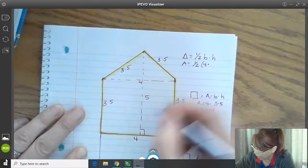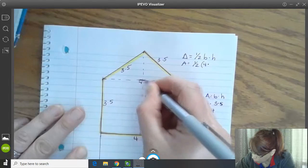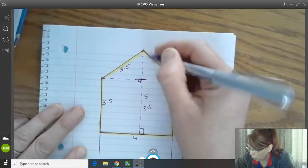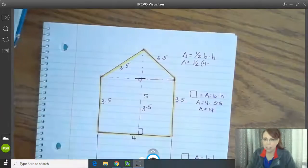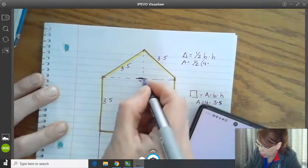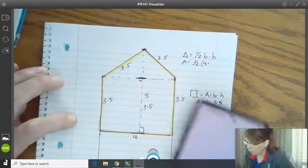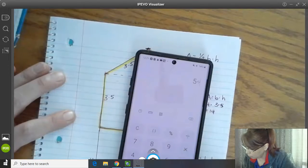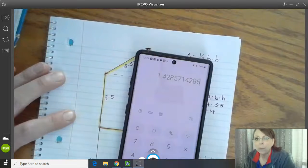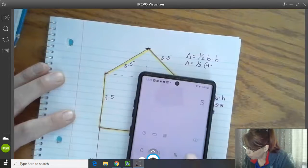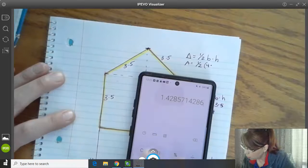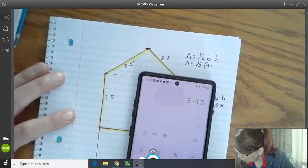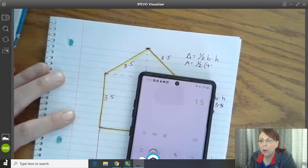So this in total measures five, this section from here to here is 3.5. So how long then is this section? It has to equal five total. So from here to this point, we want five minus 3.5. I put that in wrong. Five minus 3.5. Try that again. There we go. 1.5.